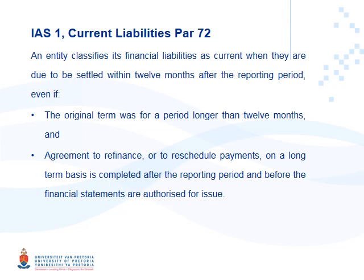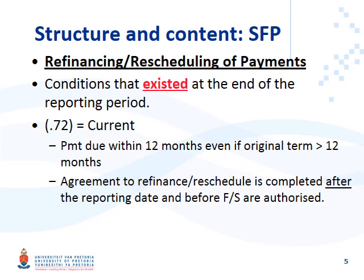Paragraph 72 goes further and says it's still a current liability even if there is an agreement to refinance or reschedule payments on a long-term basis, completed after the reporting period but before the financial statements are authorized for issue. Refinancing means you replace your old loan with a new one. But at year end you still have the old loan terms — the same logic as IAS 10: go and look at the conditions that exist at year end.